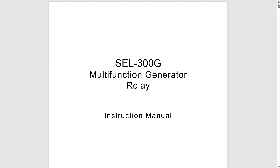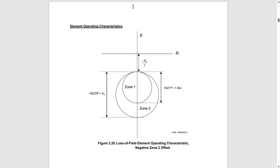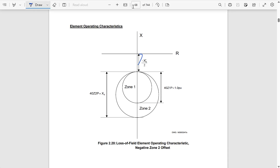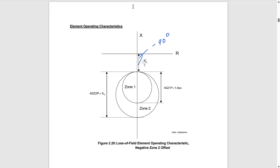In the instruction manual for the SEL 300G relay, on page 68, you can see a scheme that implements two zones — basically two mho elements with a negative offset. Because the impedance will travel from the load impedance to the negative X-axis during a loss of field condition, the mho elements are looking in the reverse direction, that is at minus 90 degrees, so our mho elements are looking in the negative X direction.